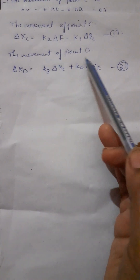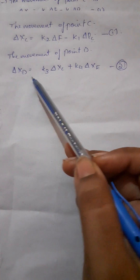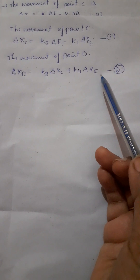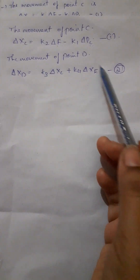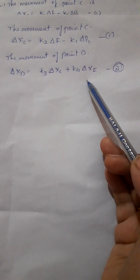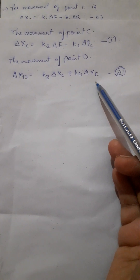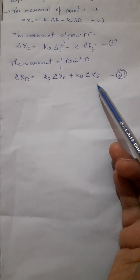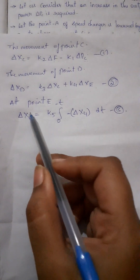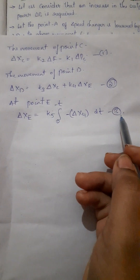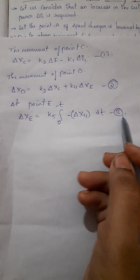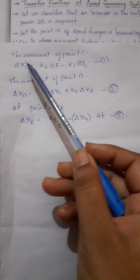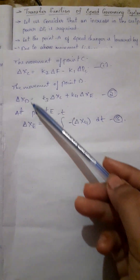Coming to point D, we consider δxd = K3·δxc + K4·δxc. We consider these changes in this equation. Similarly, we represent the point E equation. So we have equation 3, giving us 3 equations total: equation 1, equation 2, equation 3, with variables δxc, δxd, and δxe.